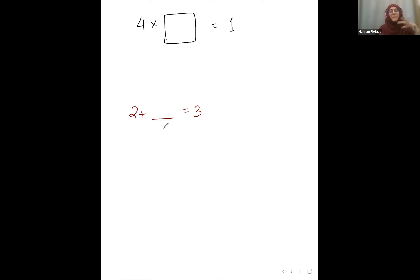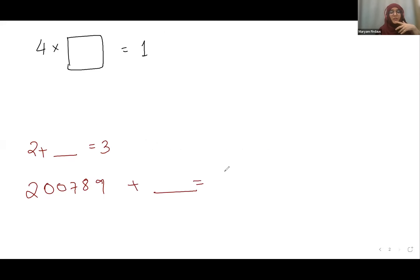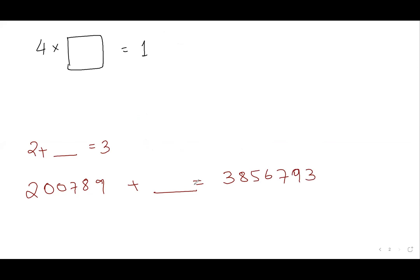How about if I give you a big number — like 200789 plus what will give you 385693-something? Then how will you find it?